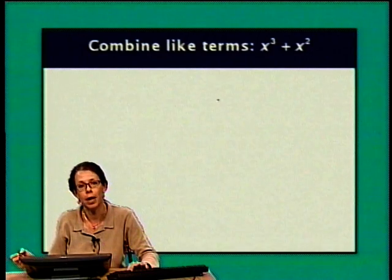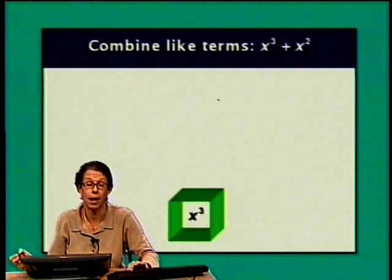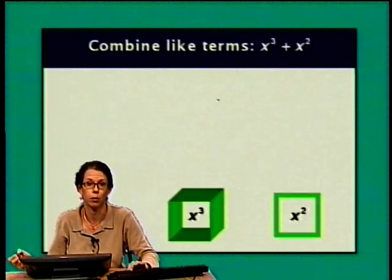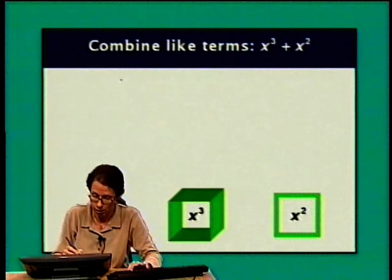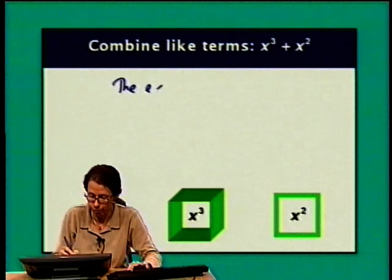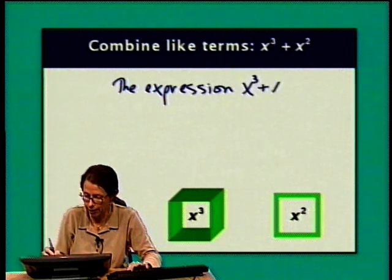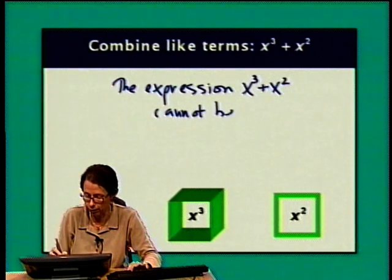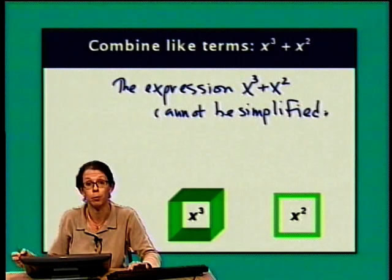Now combine like terms: x cubed plus x squared. These are not like terms — x cubed represents a volume and x squared represents an area, and there's no way to add an area to a volume. So the expression x cubed plus x squared cannot be simplified; we don't have like terms and there's nothing we can combine.